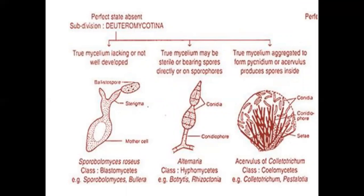In Deuteromycotina: true mycelium may be lacking or not well developed, as in Sporobolomyces (Basidiomycetes). True mycelium may be sterile or bearing spores directly or on sporophores, as in Alternaria (Hyphomycetes). True mycelium aggregates to form pycnidia or acervuli producing spores inside, such as acervuli of Colletotrichum — class Coelomycetes.